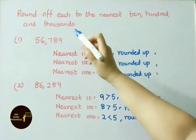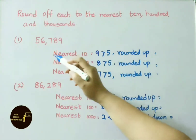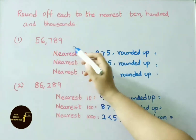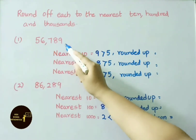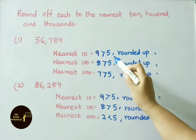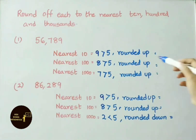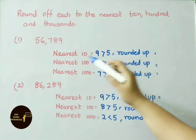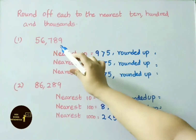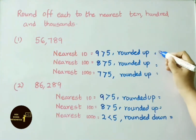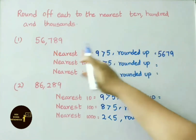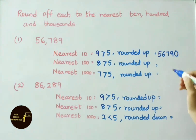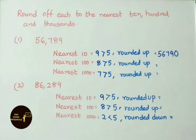Now round off each to the nearest 10, 100 and 1000. First number: 56,789. Nearest 10: the digit to the right of the 10s place is 9. Since 9 is greater than 5, we round up — place 0 and increase 8 to 9. So 56,790 is the nearest 10 value for 56,789.